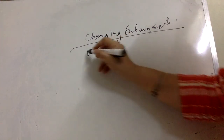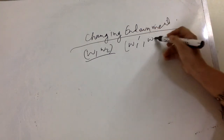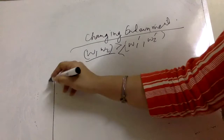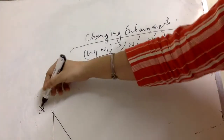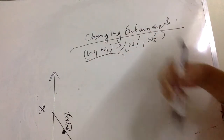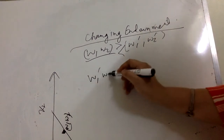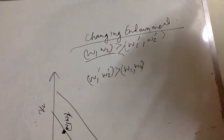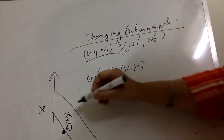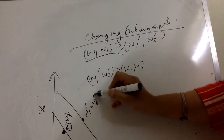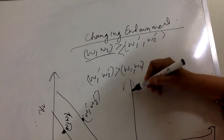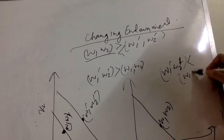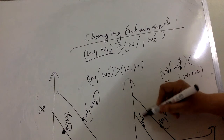If the endowment increases from (w1, w2) to (w1 prime, w2 prime), income rises for every price level, so the budget line shifts outward to a new, higher budget line. If instead the endowment decreases to a lower (w1 prime, w2 prime), the budget line shifts inward, reducing the consumer's opportunity set.